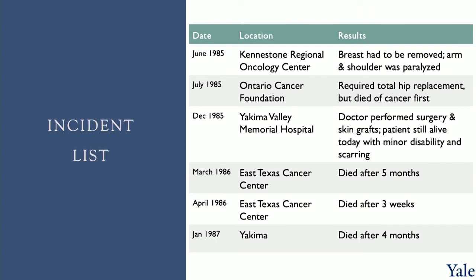There were a total of six reported incidents involving Therac 25: the first at Kennestone Regional Oncology Center, one at Ontario Cancer Foundation, two at Yakima Valley Memorial Hospital, and two at East Texas Cancer Center. All of the incidents had similar storylines as the East Texas Cancer Center incident that we just discussed.